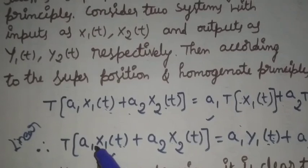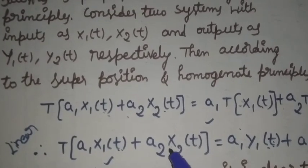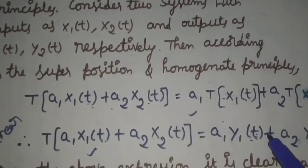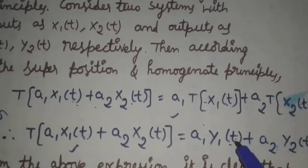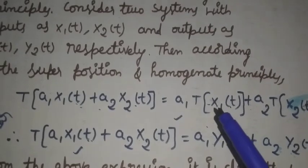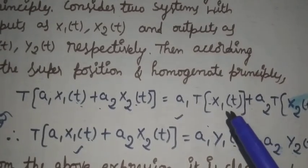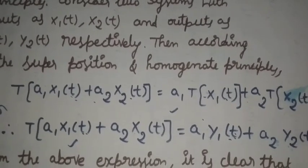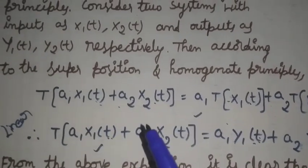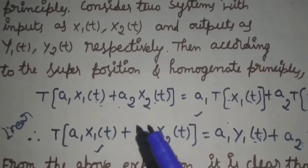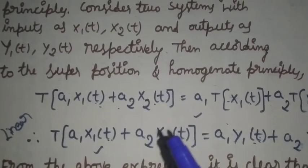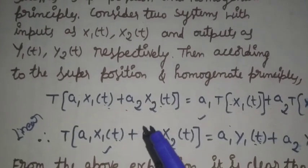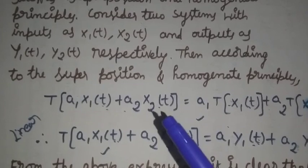Therefore, T(a1·x1(t) + a2·x2(t)) can also be written as a1·y1(t) + a2·y2(t), where y1(t) = T(x1(t)) and y2(t) = T(x2(t)). This is the condition of linear systems. If the system satisfies this condition, then the system is said to be linear; otherwise, the system is said to be non-linear.